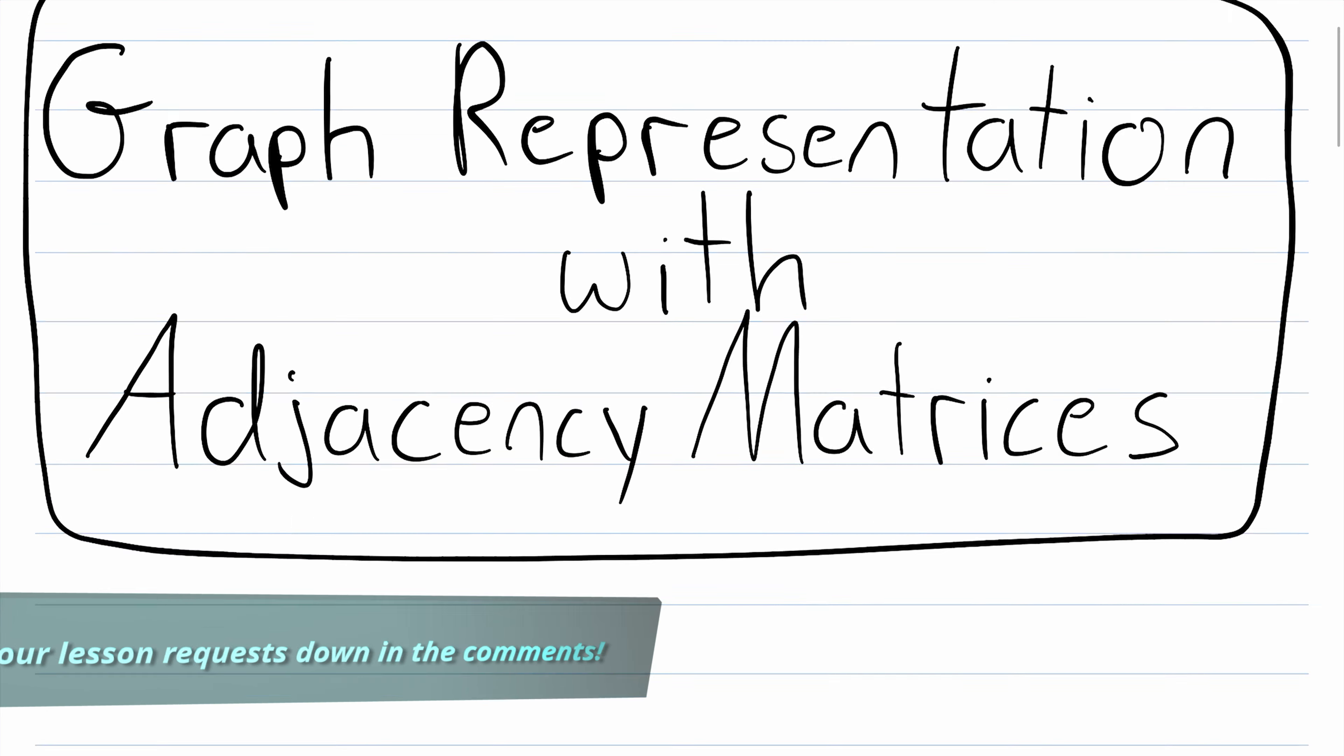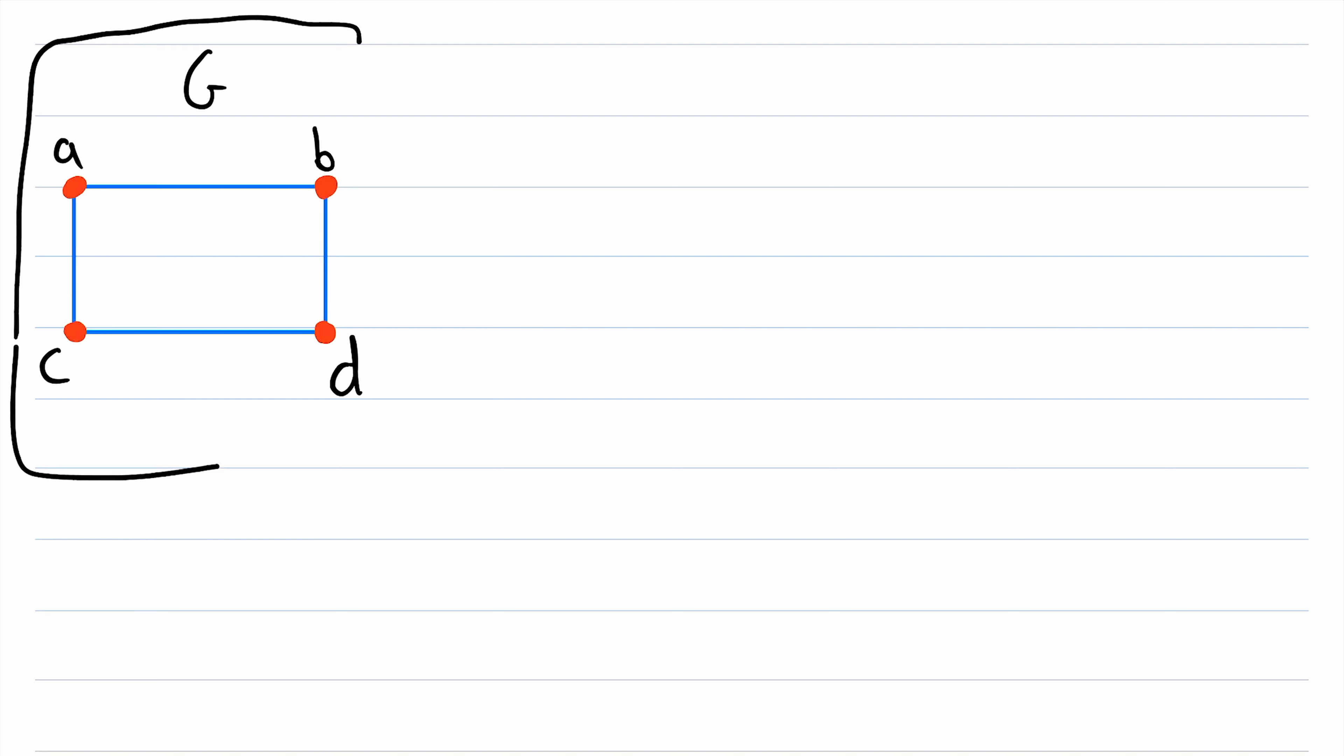This is some real nifty stuff because it lets us take a beautifully drawn graph like this and turn it into a soulless square with zeros and ones. But all joking aside, adjacency matrices can certainly be useful and we'll introduce them by creating one for this graph G.